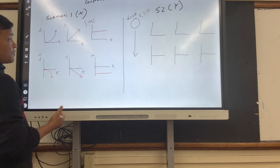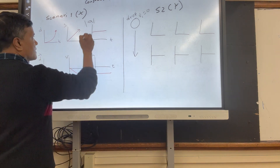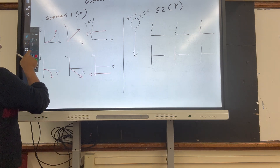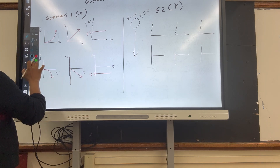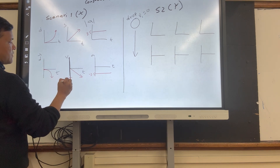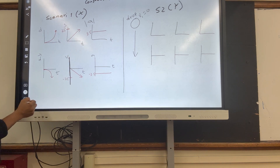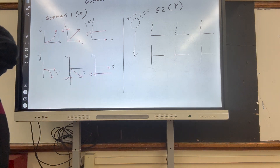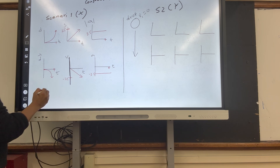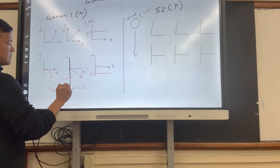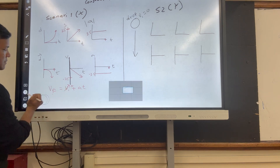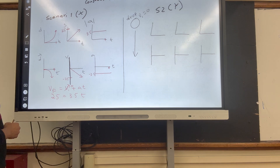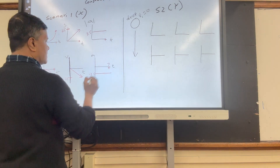Before we find the distance, we find the time. The acceleration is negative 3.5. We're trying to find the distance when the velocity is 25 meters per second, so velocity is negative 25. Using vf = vi + at, with vi = 0 and vf = 25, t = 25 divided by 3.5, which is approximately 7.1 — so we say 7 seconds.